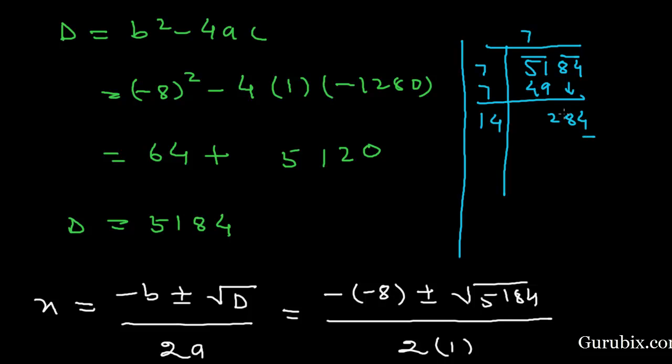We shall keep away this unit digit and divide this 28 by 14. Then we have 2, and we shall write 2 here also. If we multiply 142 with 2, then we have 284. Therefore, the square root of 5184 equals 72.